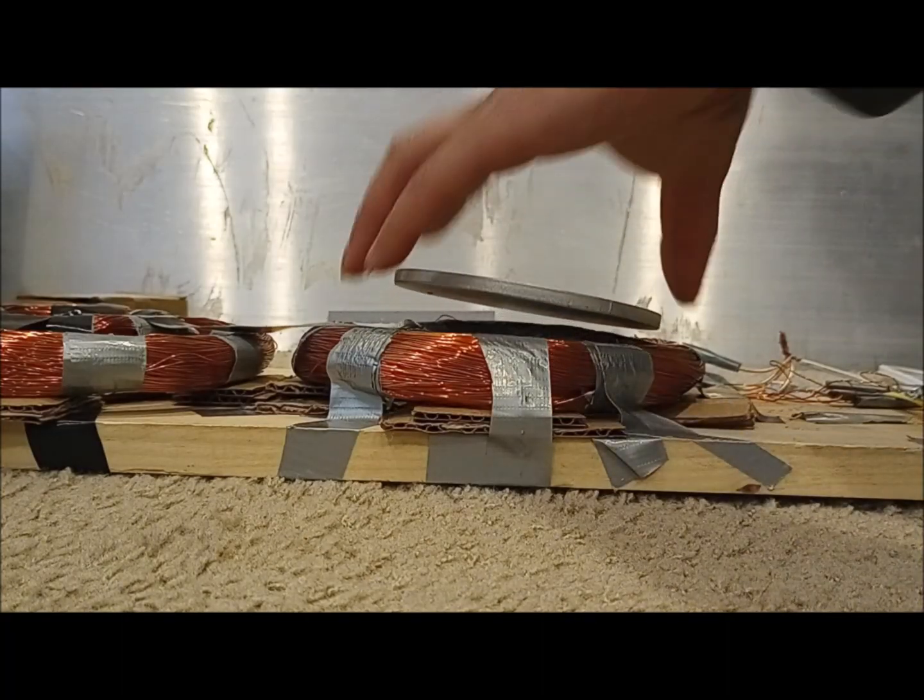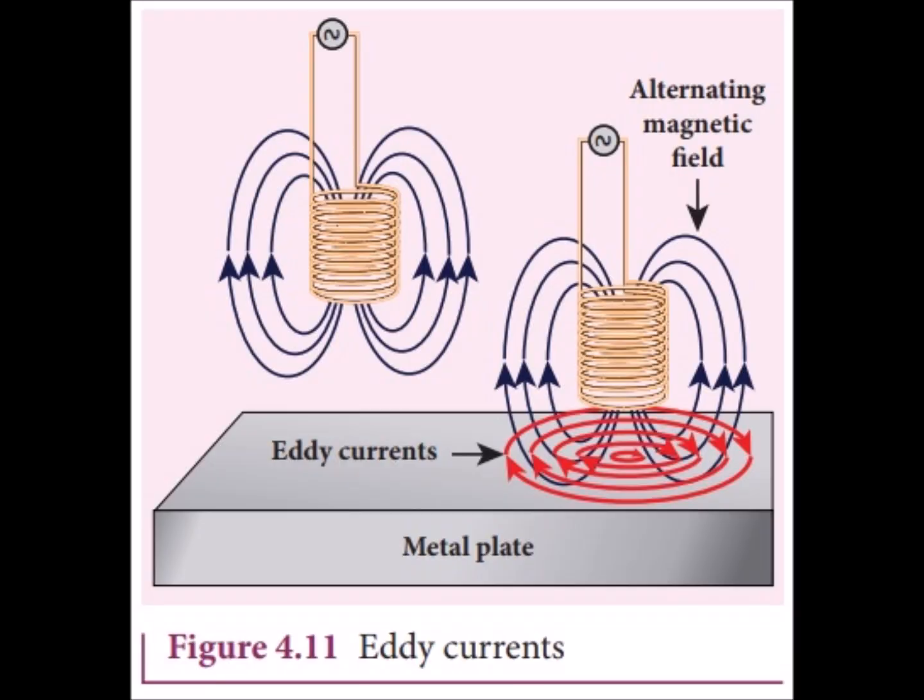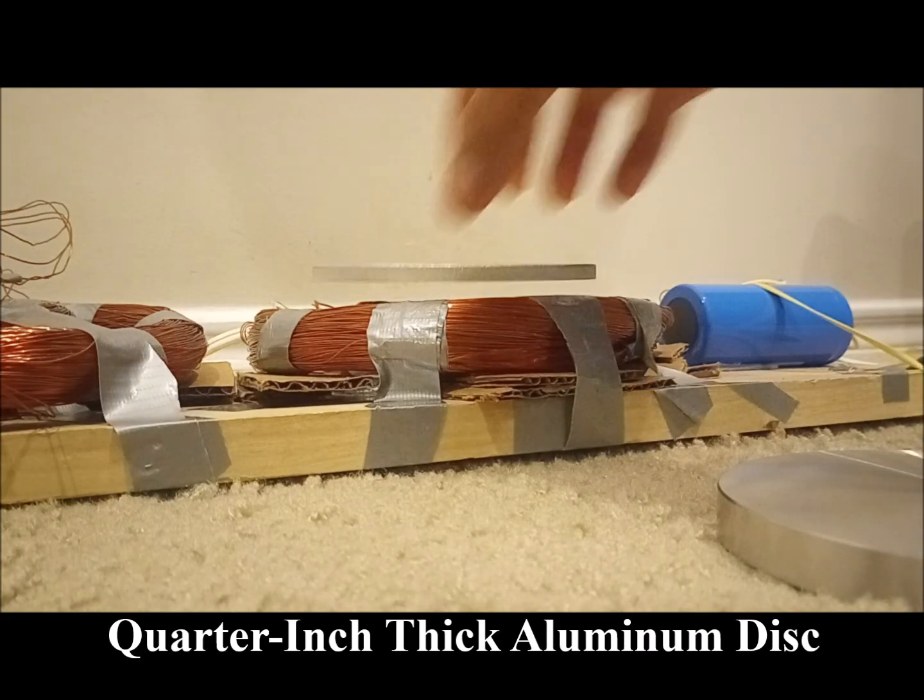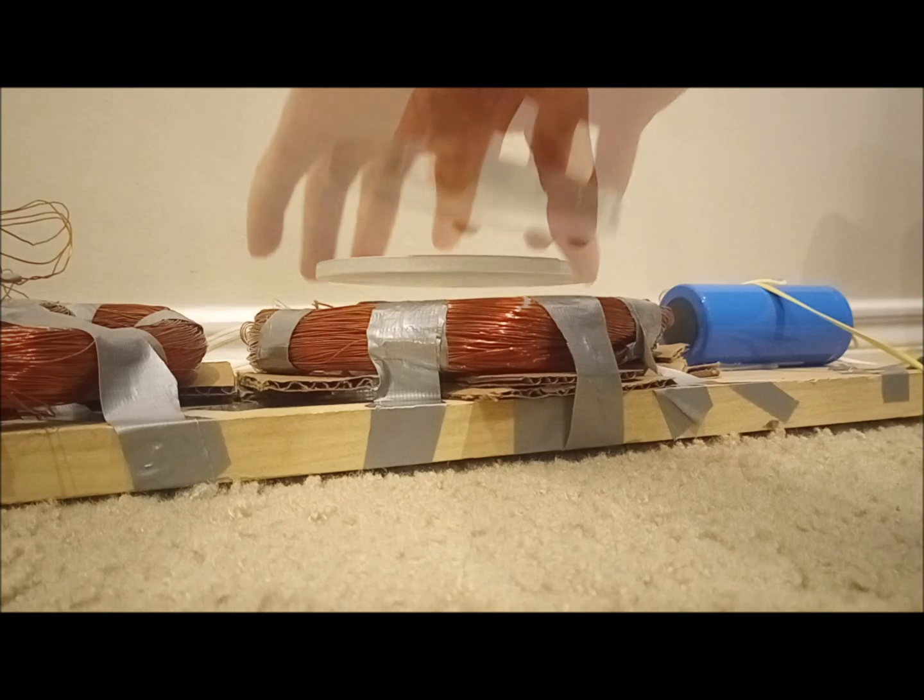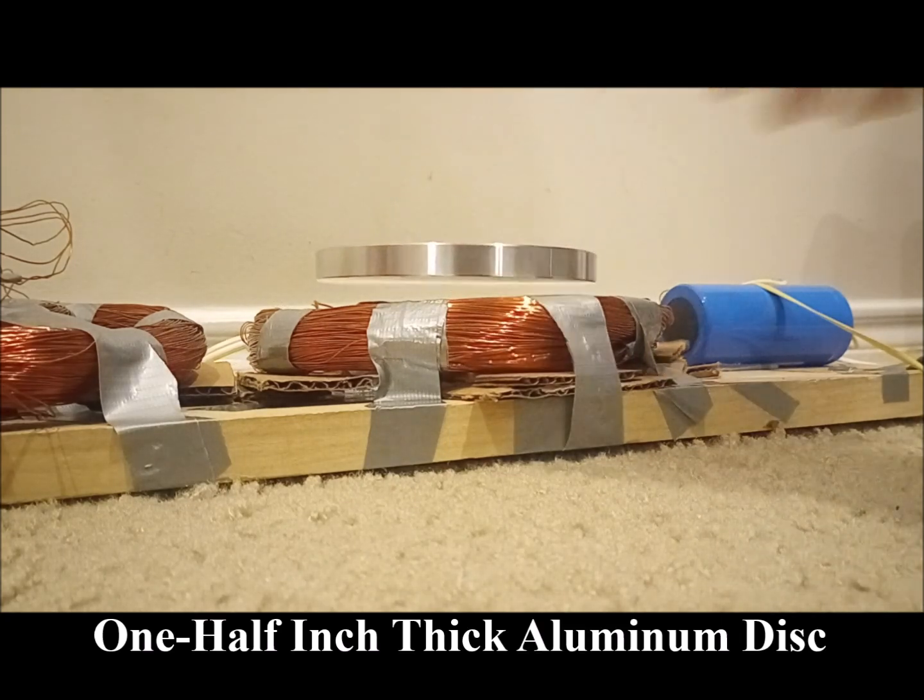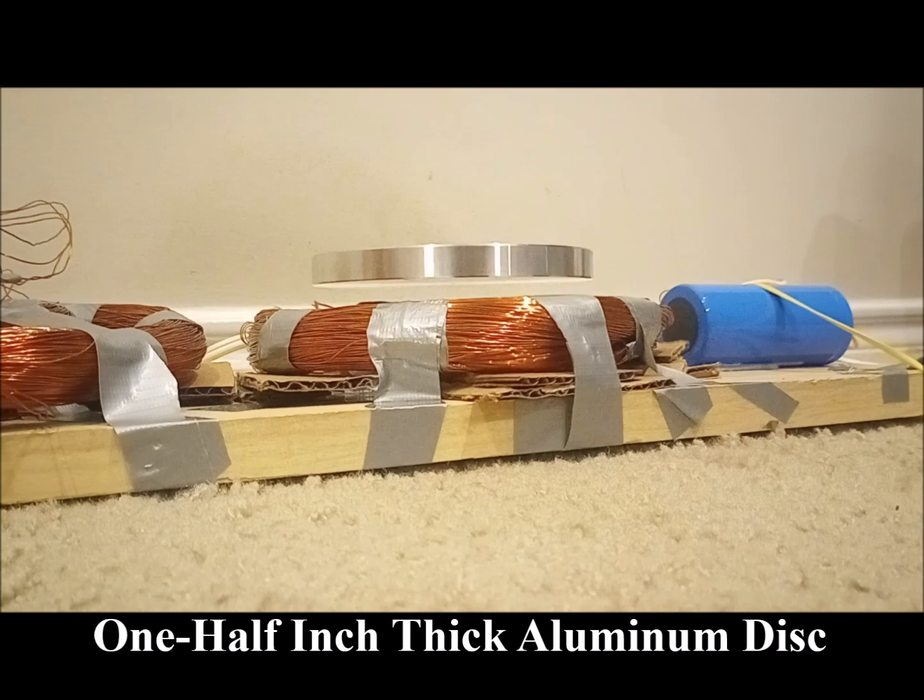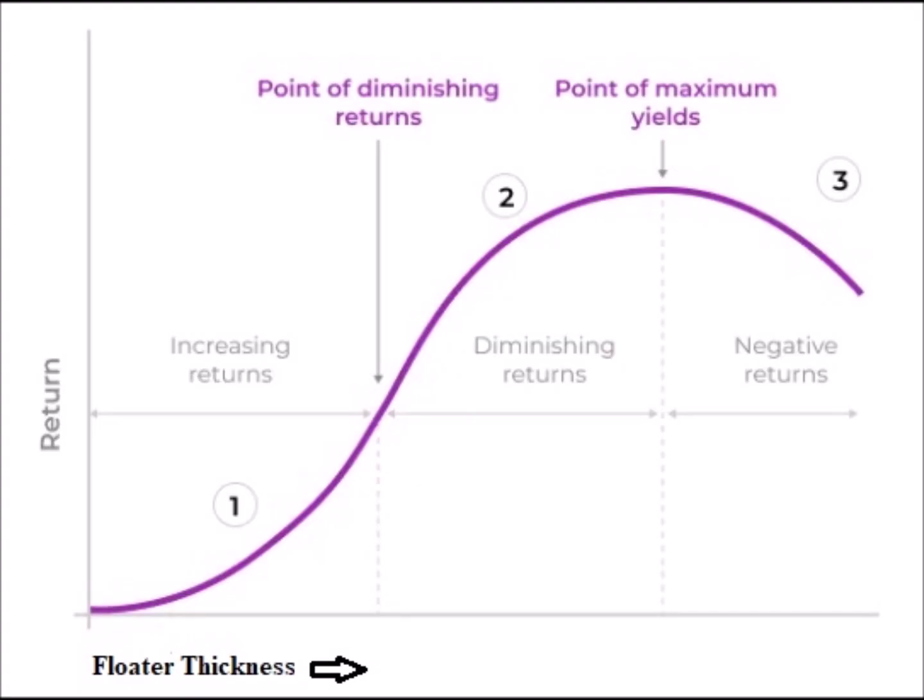Knowing that electrodynamic suspension works via eddy currents induced in adjacent metals, it followed that a thicker floater metal might conduct these currents even better resulting in stronger magnetic fields. This proved correct as a disc twice as thick at one half inch floated higher and seemed to have more carrying capacity. A one inch disc might float even higher.